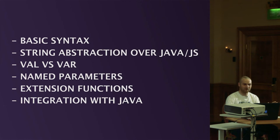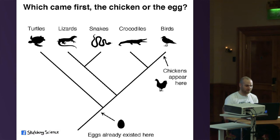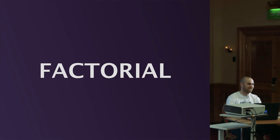So that was Hello World. What we looked at: basic syntax, string interpolation, `val` versus `var`, named parameters, extension functions, and integration with Java. Because that was intense, here is a joke — the classic debate of what came first, chicken or egg. The correct technical answer: eggs were before chickens existed, with lizards and so on, so eggs come first.